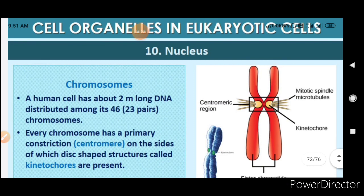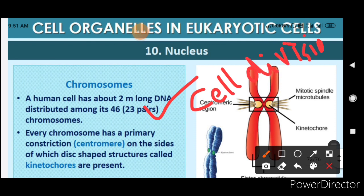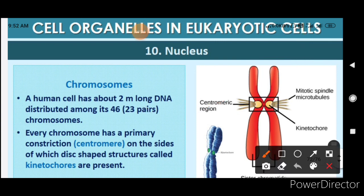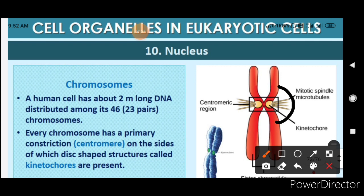Now, chromosomes: a human cell has about two meters of DNA distributed among its 46 chromosomes, that is 23 pairs. These pairs of chromosomes are only visible during cell division; otherwise they are present as thin threads, which is the chromatin. Every chromosome has a primary constriction, visible in the diagram as a curve.